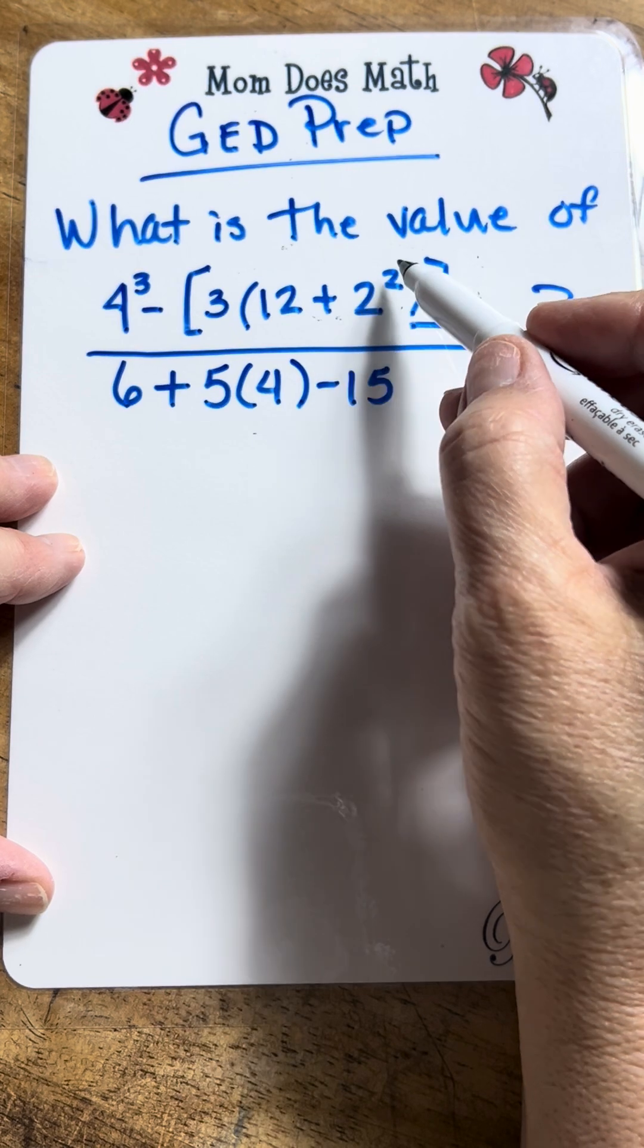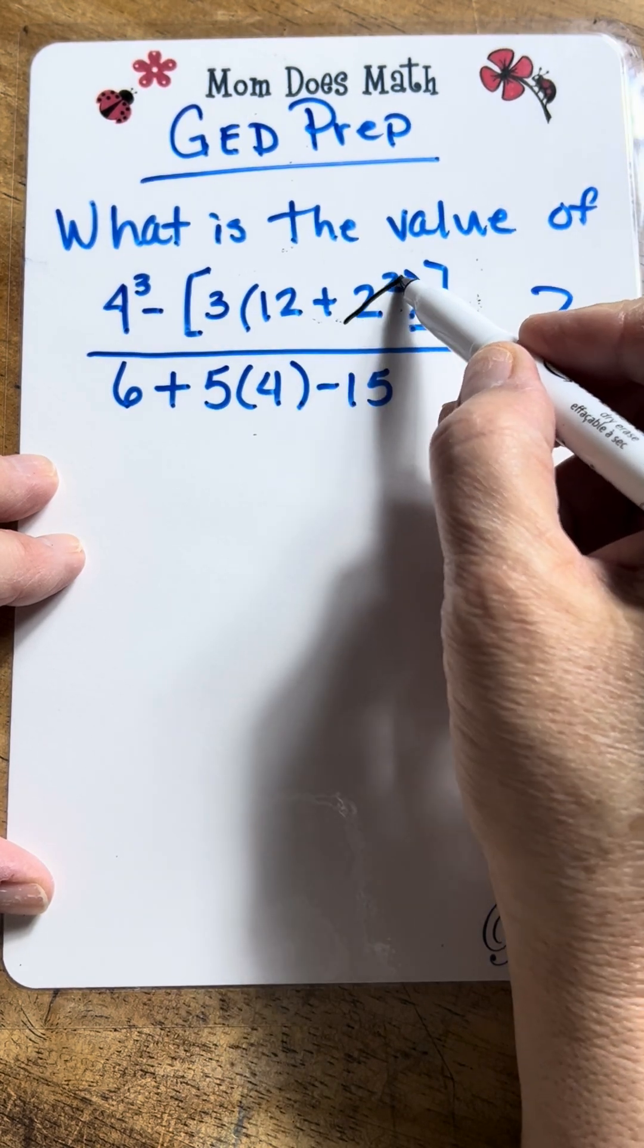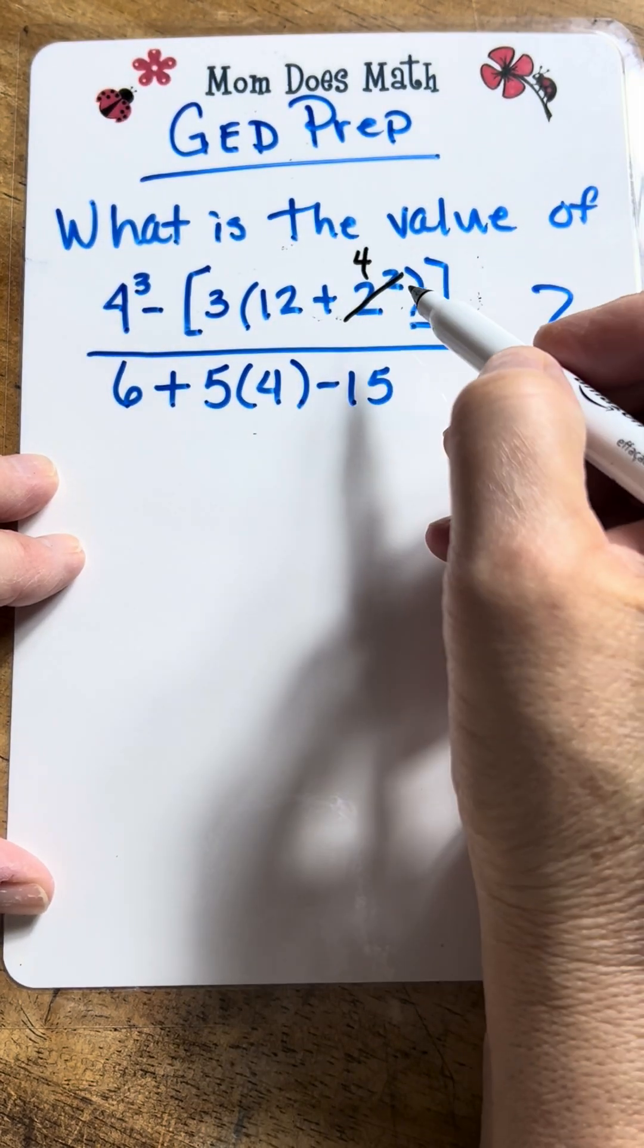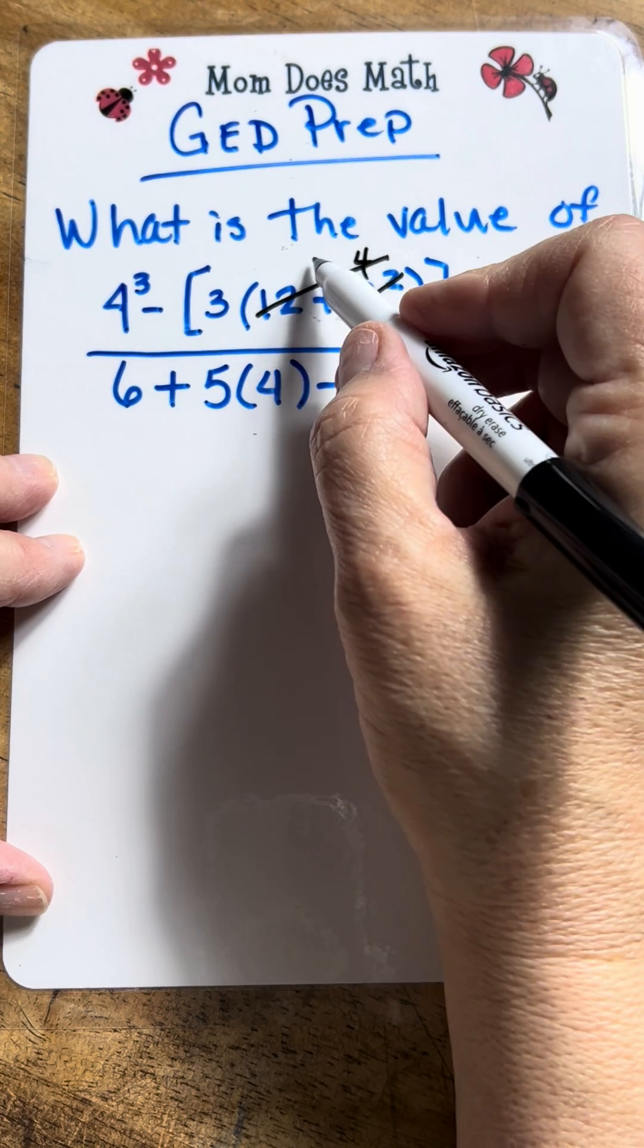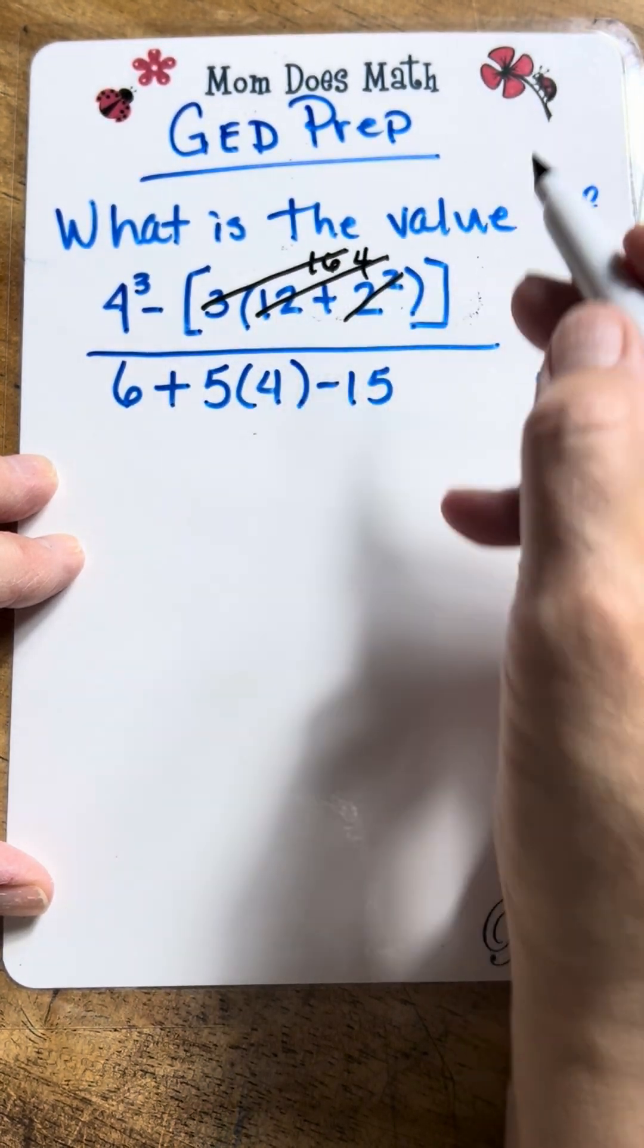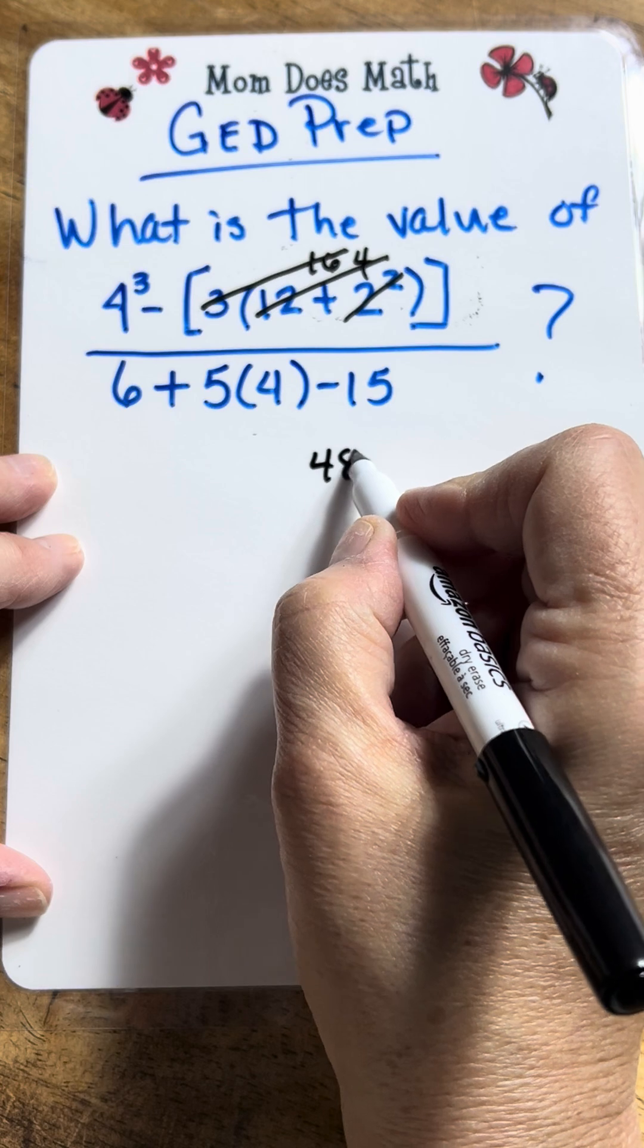Alright, let's go to the inside first and take care of these exponents. 2 to the second power is 4. 12 plus 4 is 16. And 3 times 16 is 48.